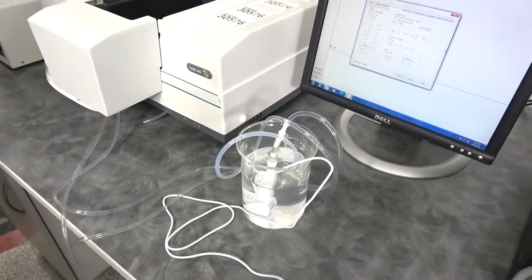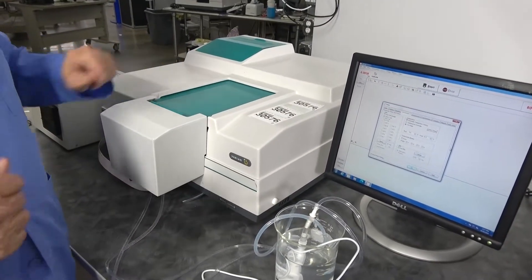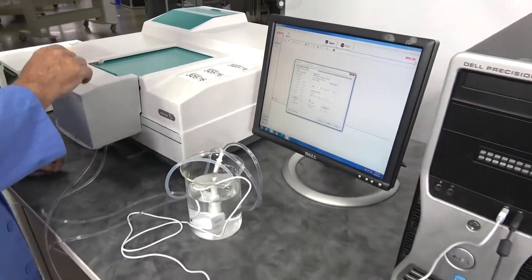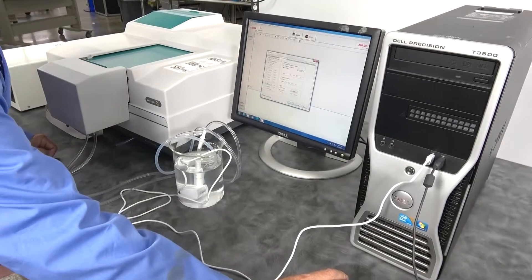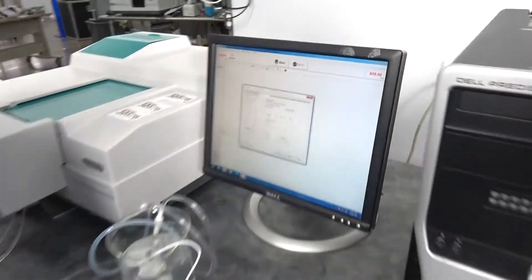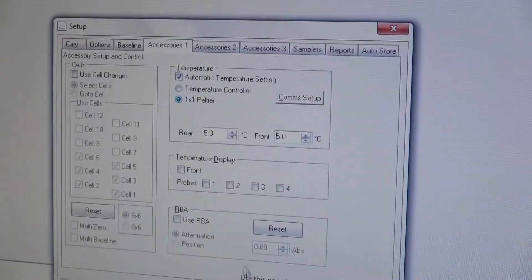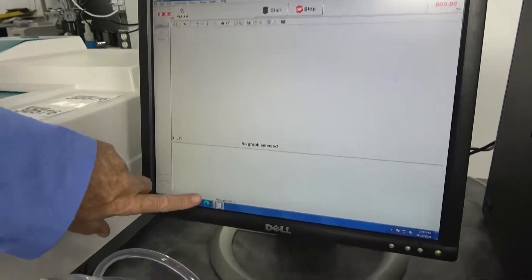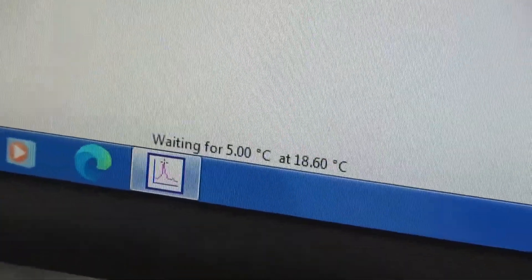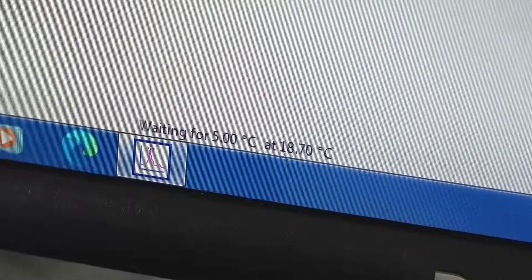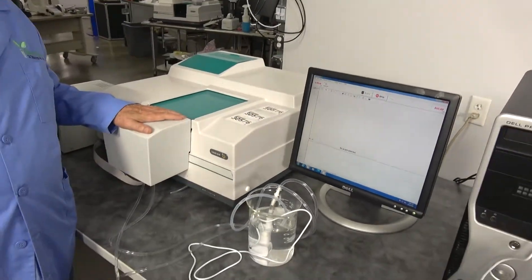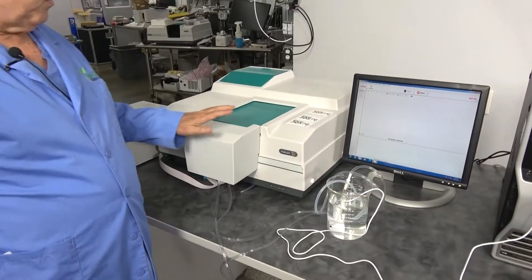This unit, in cooling, is actually running. And when you do have the unit, you go into the accessories, the setup, you set your temperature, the one-by-one peltier, click OK. It'll show your temperature and what it's waiting for and the degrees that it's running. It will wait to run your scan until it gets to the correct temperature.